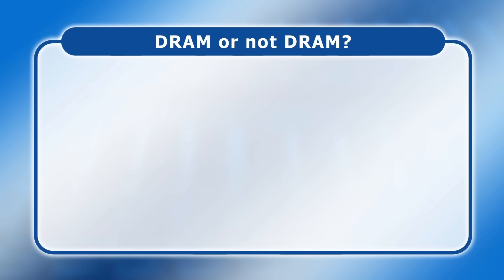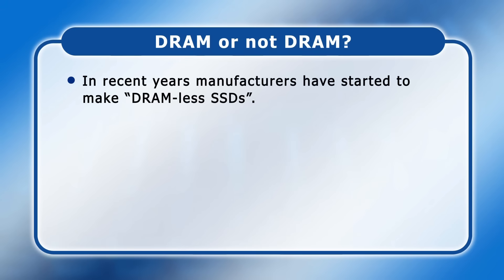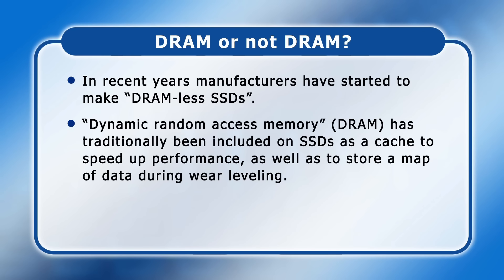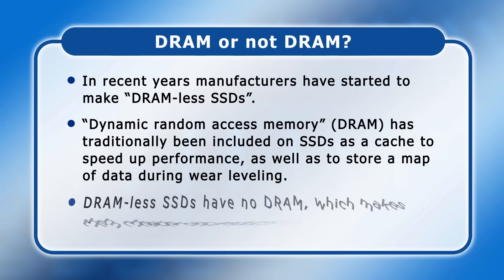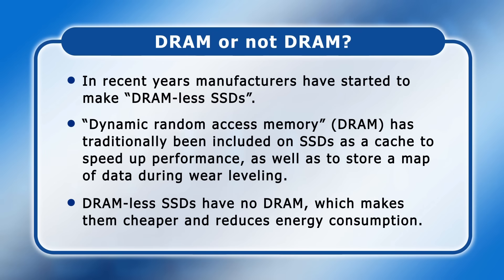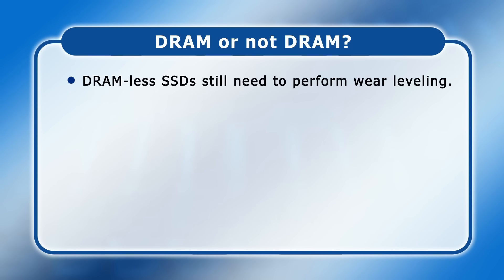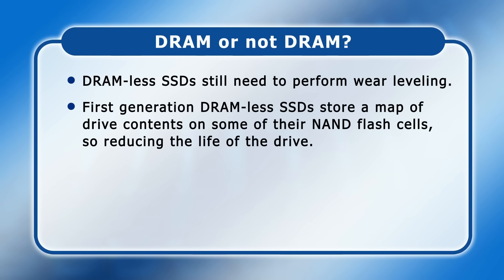In addition to using TLC and QLC, in recent years manufacturers have started to make DRAM-less SSDs. DRAM, or Dynamic Random Access Memory, only retains data when powered and has traditionally been included on SSDs as a cache to speed up performance, as well as to store a map of data as it's moved around during wear levelling. But DRAM-less SSDs have no DRAM chips, which makes them cheaper and reduces energy consumption. However, DRAM-less SSDs still need to perform wear levelling, so first-generation DRAM-less SSDs store a map of drive contents on some of their NAND flash cells, so reducing the life of the drive.